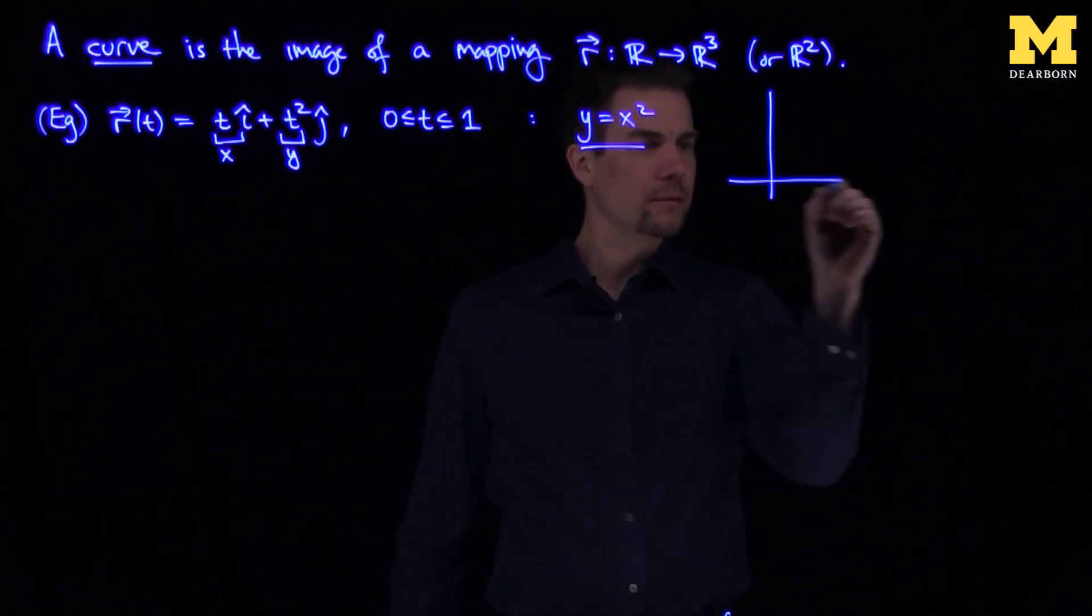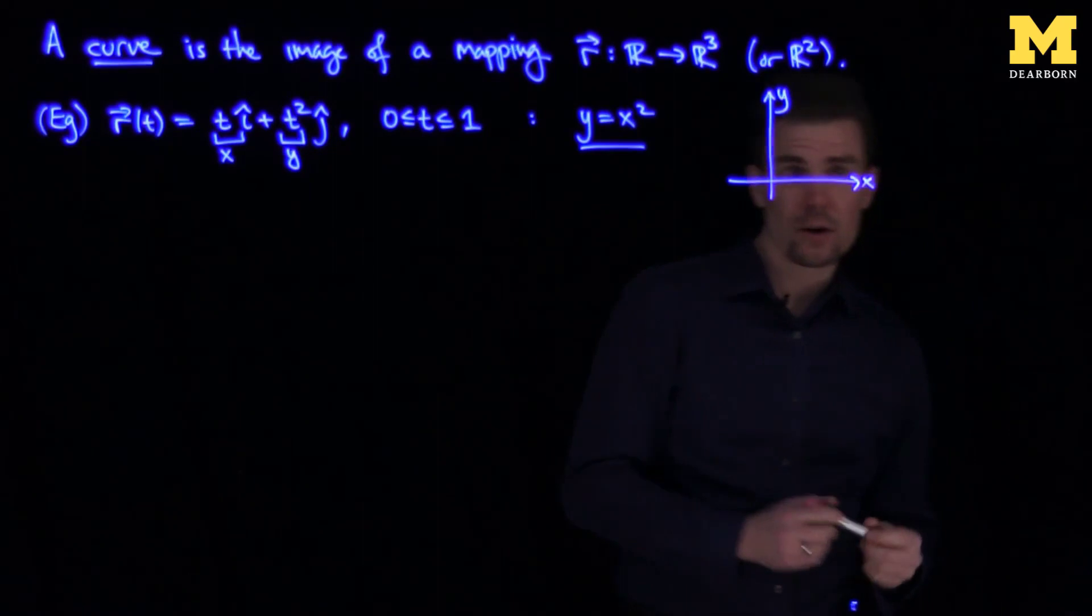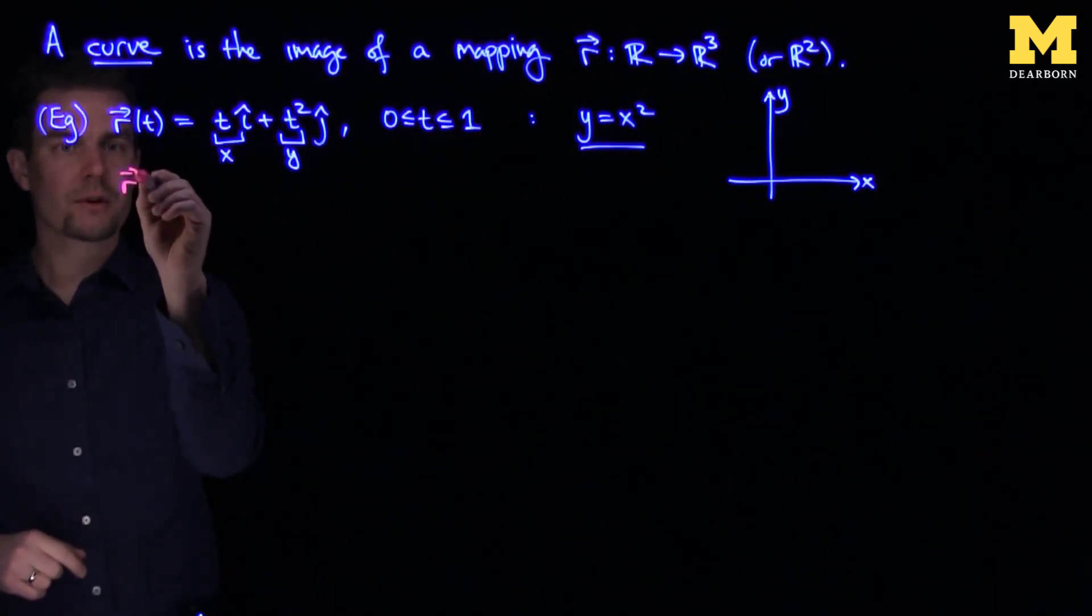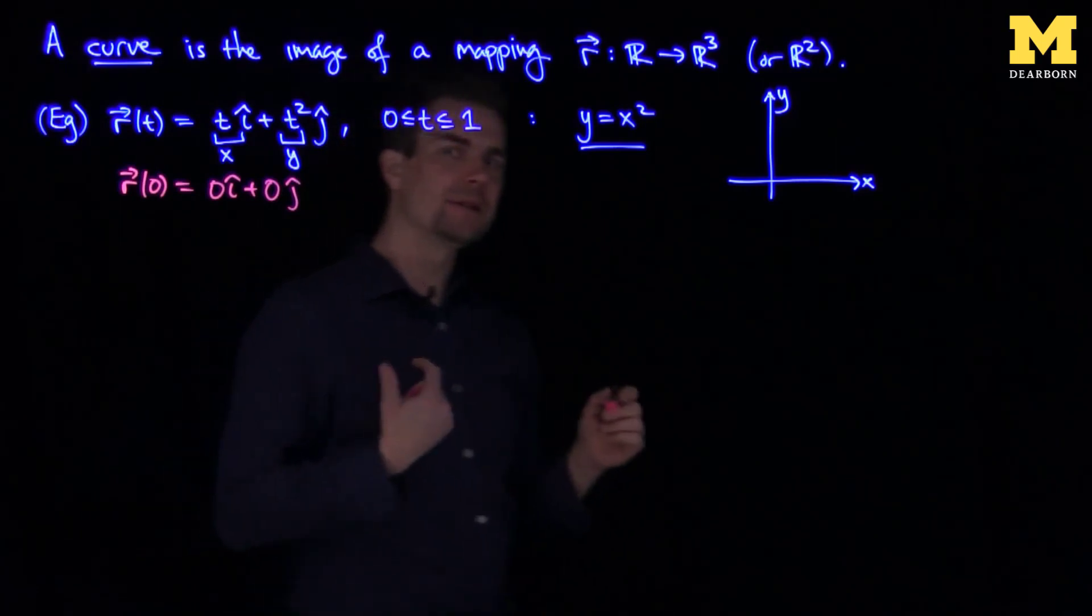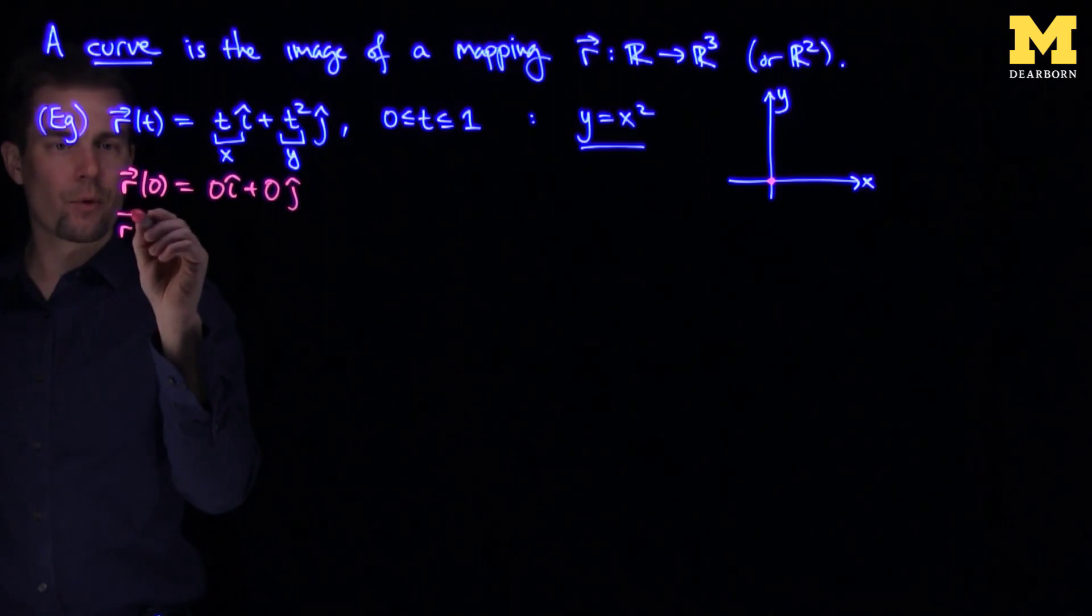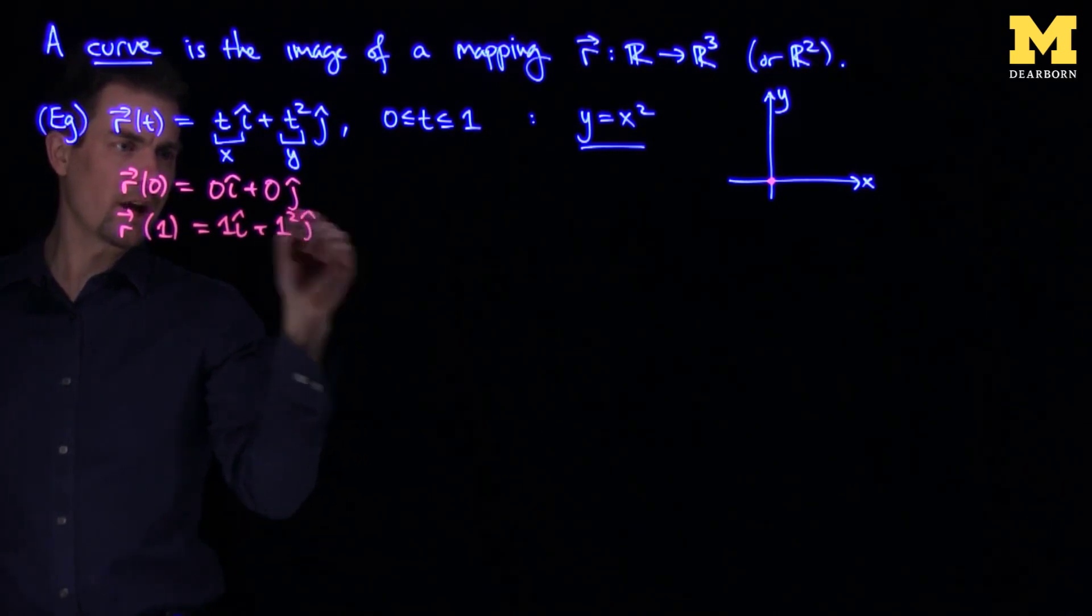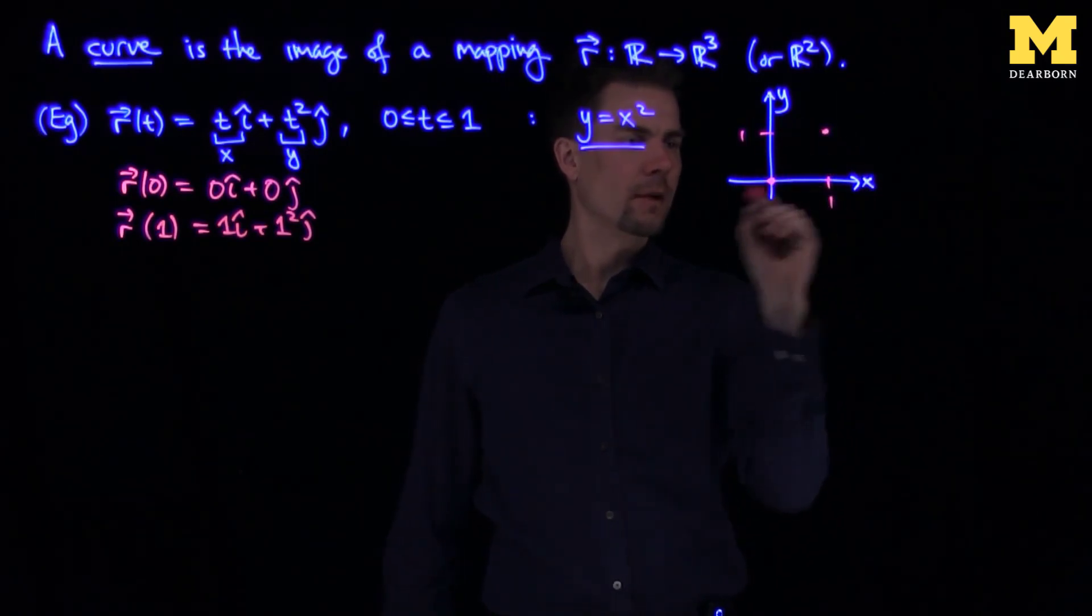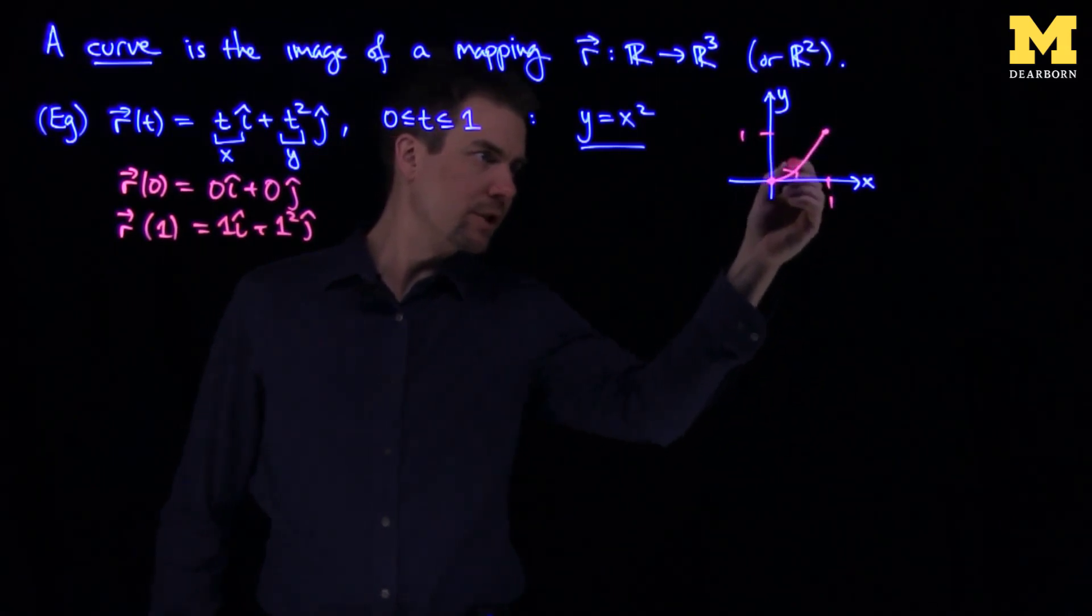So if we plot this curve, here's our x-axis and here's our y-axis. We'll plot our curve in real time. When t is equal to 0, R of 0 is 0 i-hat plus 0 j-hat. So at time 0, we start at the origin. At time 1, we end at the point 1 i-hat plus 1-squared j-hat. From time 0 to time 1, we will trace out this parabola. So our curve looks like this. It's not the full parabola, it's just this part of it.